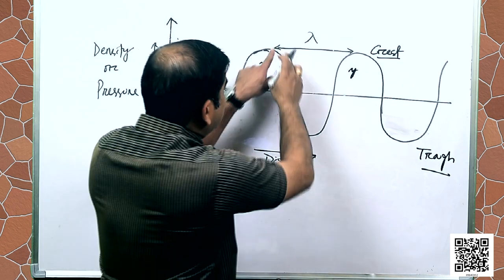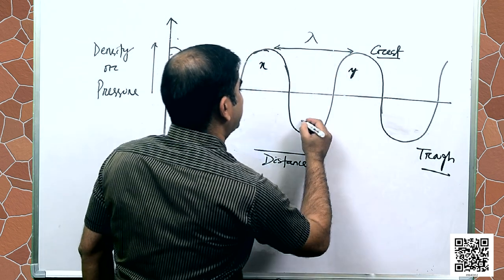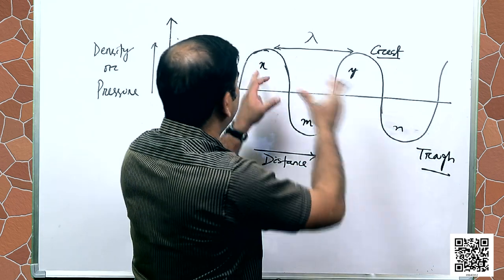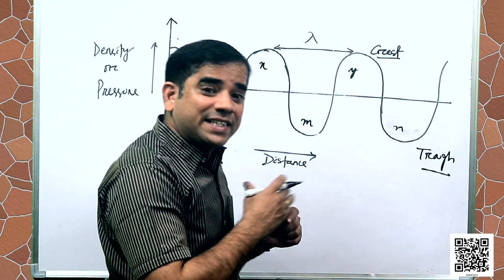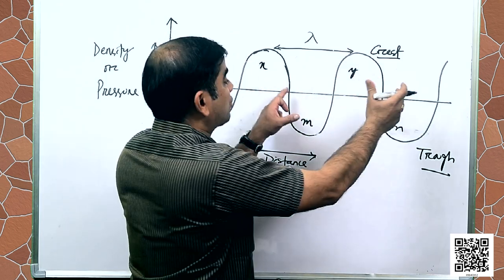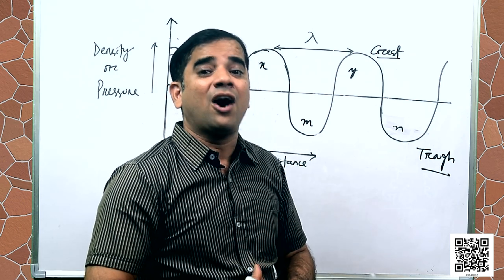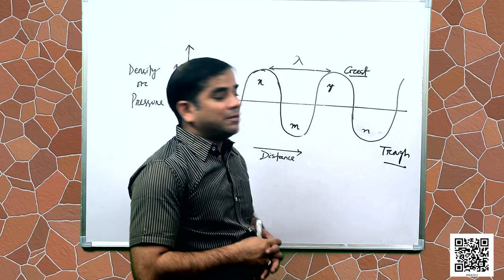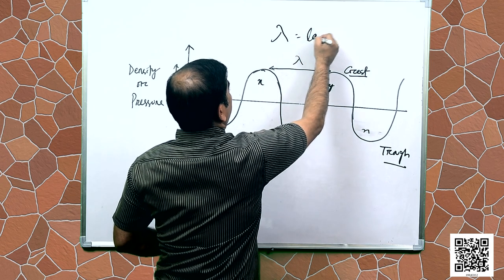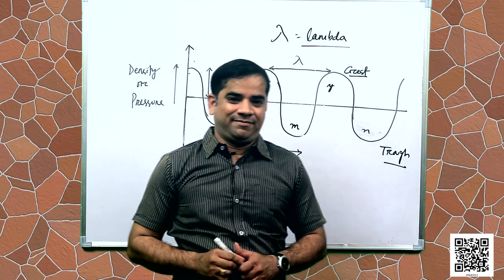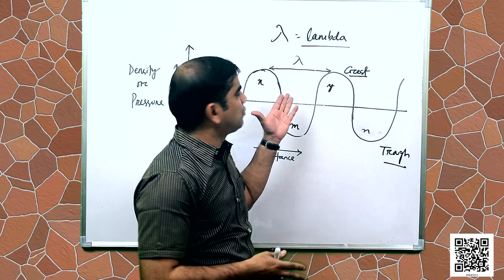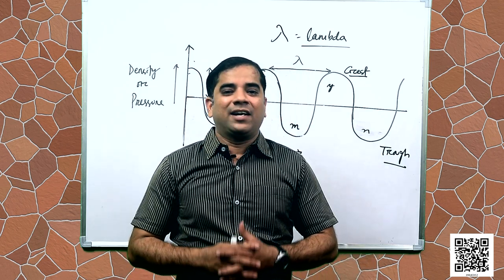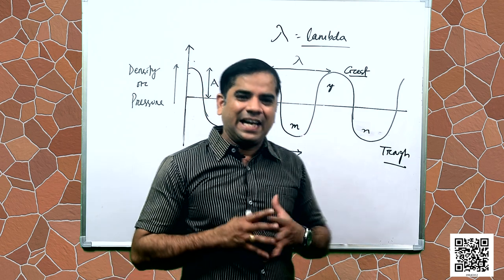The distance between two consecutive compressions or two consecutive rarefractions is called the wavelength. Wavelength is represented by the symbol lambda, which is a Greek letter. Its SI unit is meter because we are referring to distance. So wavelength is lambda and its SI unit is meter.